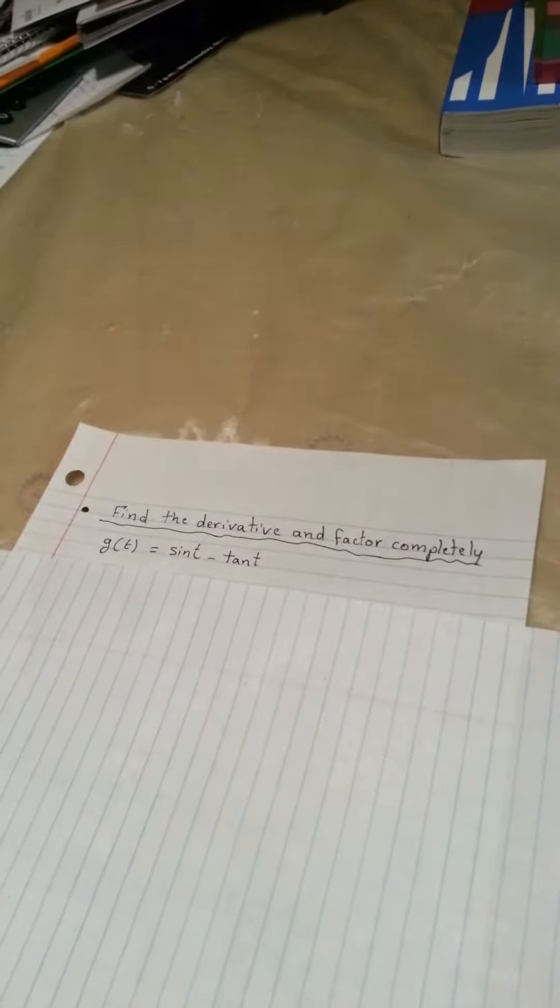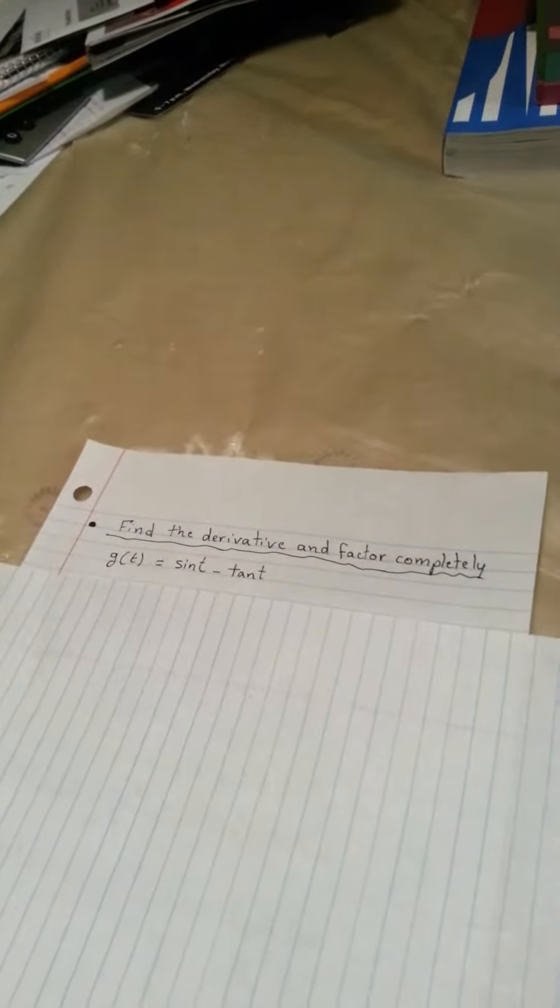Find the derivative and factor completely. G of t equals sine t minus tangent t.